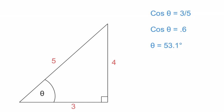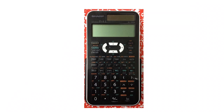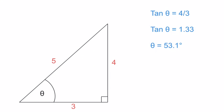That leaves us with tangent. Using tangent, we use the formula TOA. Tangent of theta is equal to 4 over 3 — opposite over adjacent. So the tangent of theta equals 1.33. We want to get rid of the tan, so we have to inverse tangent that. Let's take a look at our calculator one last time. We press inverse tan 1.33 — or 1.33 then inverse tan, depending on your calculator — and we should get our angle. And what do you know, it is 53.1 degrees.